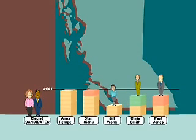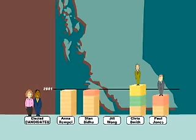After the next round of counting, no one has enough ballots to be elected, so the least popular candidate, Jill Wong, is eliminated. Her ballots are redistributed to the remaining candidates based on the preferences marked by voters.